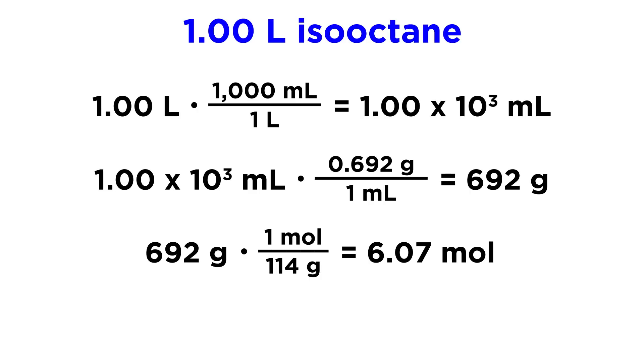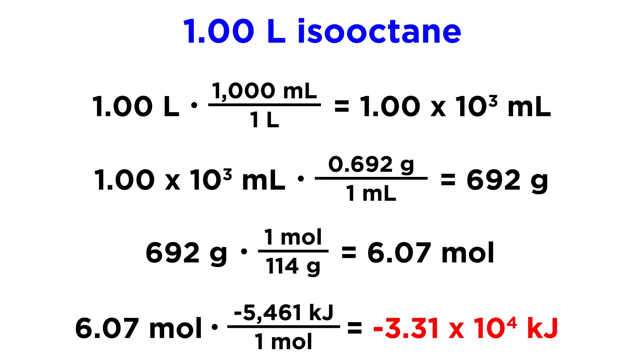So we have 6.07 moles of isooctane in that one liter of isooctane. And then lastly, we can use our thermochemical data. We can do 6.07 moles times negative 5,461 kilojoules that are released for every mole of isooctane, and we get negative 3.31 times 10 to the 4 kilojoules. That is how much energy is associated with the combustion of 1 liter of isooctane.